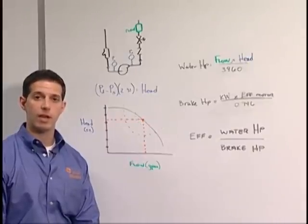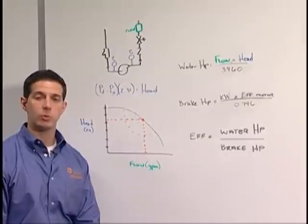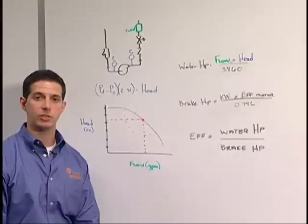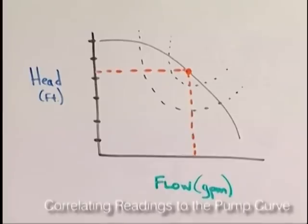Once data is collected there, slowly open the discharge to about 50% of the as-is condition. That data can then be correlated to the pump curve.